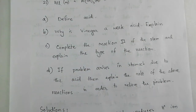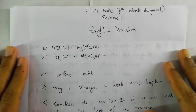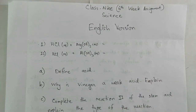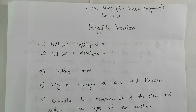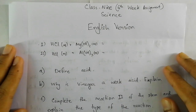To summarize: the question gave two reactions; we defined acid; vinegar is a weak acid because it ionizes only partially; reaction 2 was completed with AlCl₃ and water; and if the HCl in the stomach causes a problem, taking tablets containing Mg(OH)₂ and Al(OH)₃ triggers a neutralization reaction and solves acidity. I hope you can now complete your own assignment. Please subscribe to our channel — thank you for staying with us.